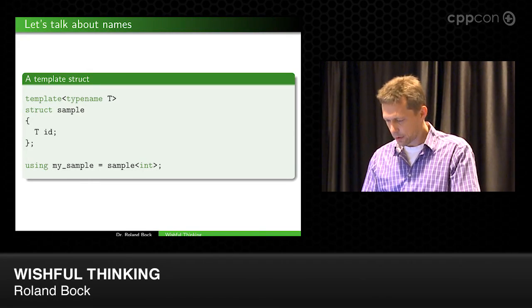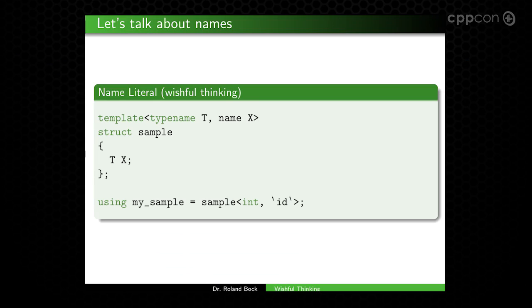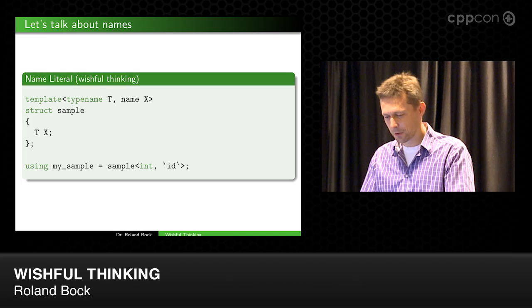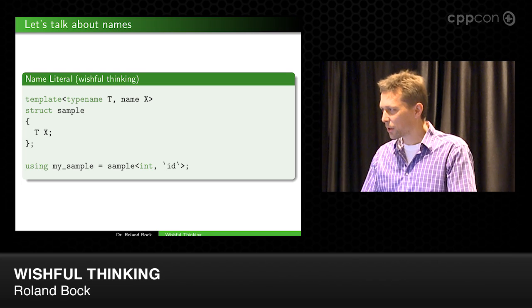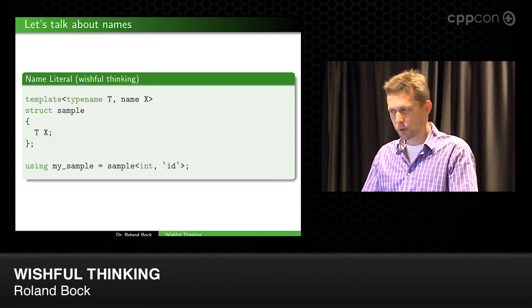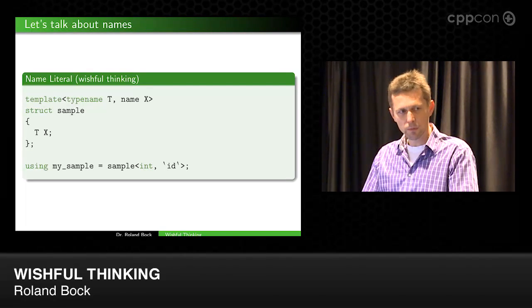But I would like to do that. I would really like to do this: say we have a template and we instantiate it with a type and a name — that's my first wish — so then we could have a member with a configurable type and a configurable name.